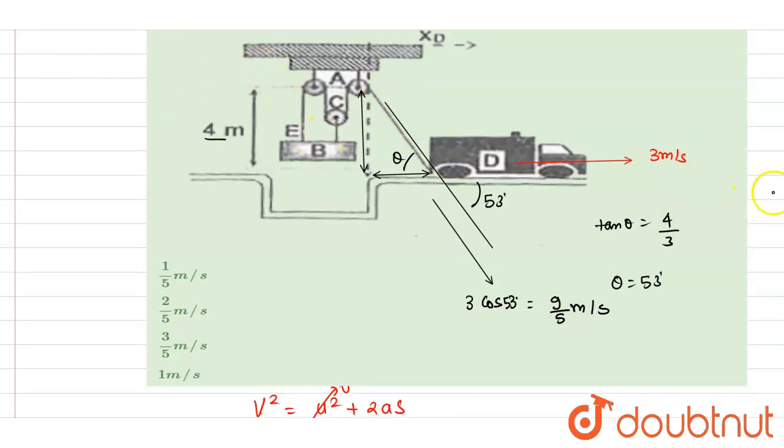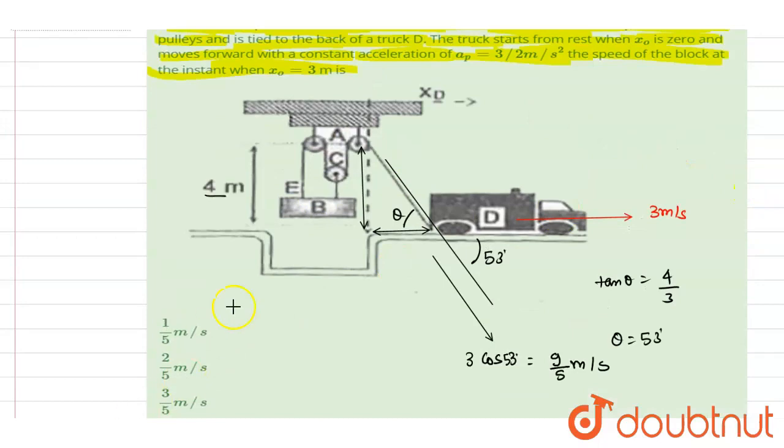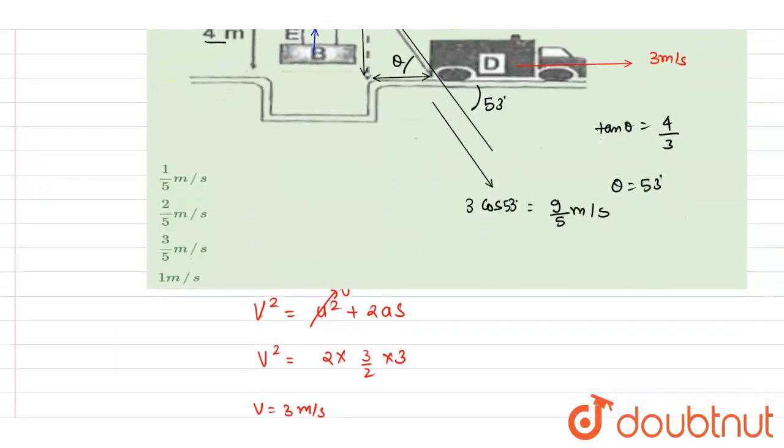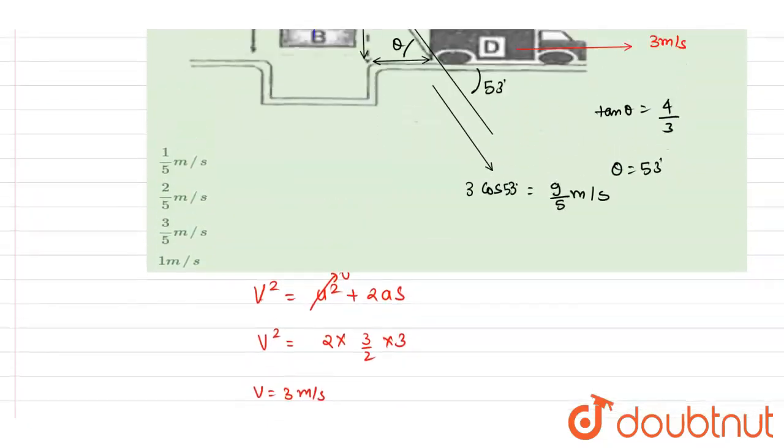So we want the velocity of B. Let's say B is moving in upward direction with velocity vB and we want that. So if you see here, this length is increasing with 9/5 meter per second. So if I write down the increase in length, it should be equals to the decrease in length.